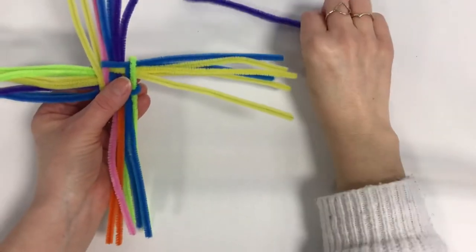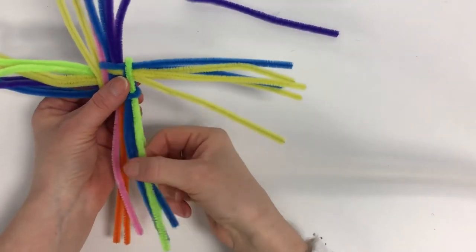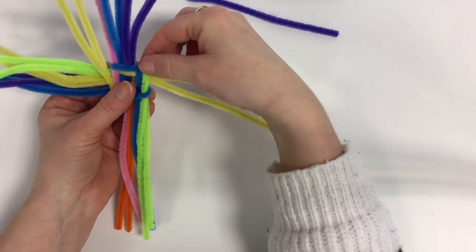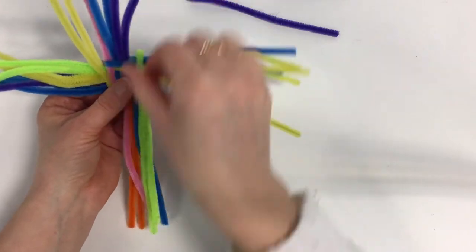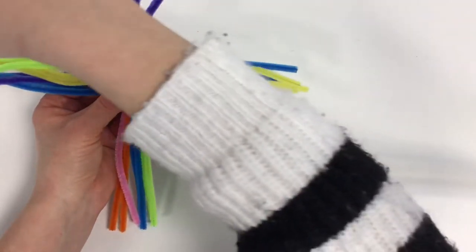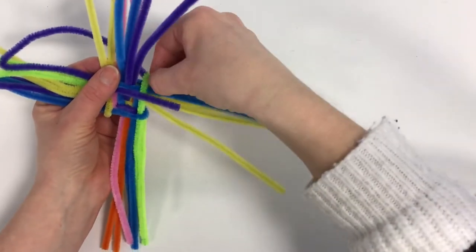Now we have one pipe cleaner left, and to make it nice and secure we're going to get the very last reed here, so the one on the far right, and we're going to lift it up a little bit and when we put this reed through we're going to thread it through the green one.